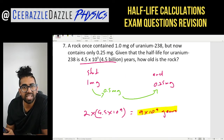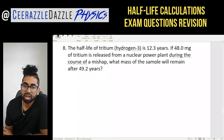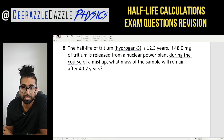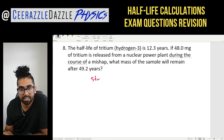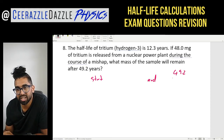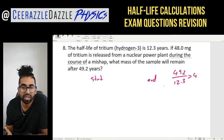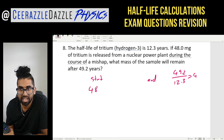Last question: the half-life of tritium (hydrogen-3) is 12.3 years. If 48 milligrams of tritium is released from a nuclear power plant during a mishap, what mass will remain after 49.2 years? In 49.2 years, how many half-lives have occurred? 49.2 divided by 12.3 gives 4 half-lives. At the start we have 48 milligrams.